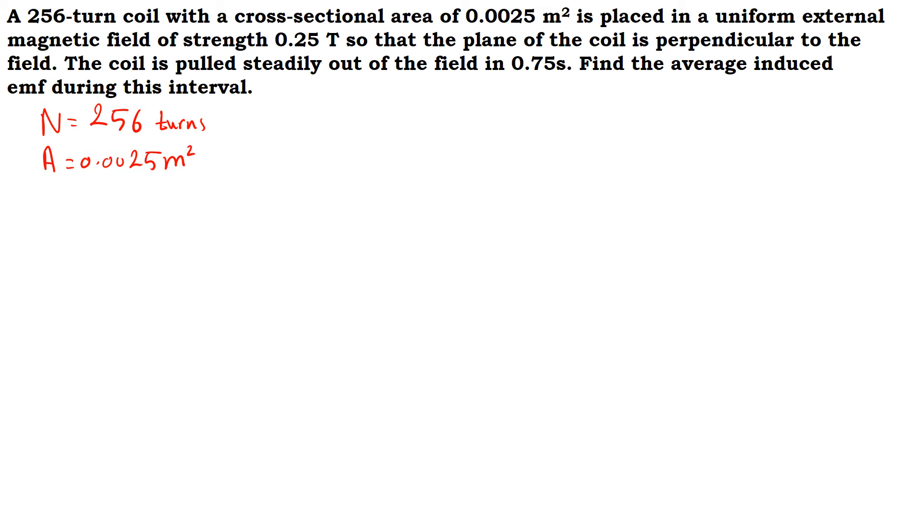The coil is placed in a uniform external magnetic field. Uniform means that the magnitude or strength of the field is constant and its direction does not change. The field has a strength of 0.25 Tesla.